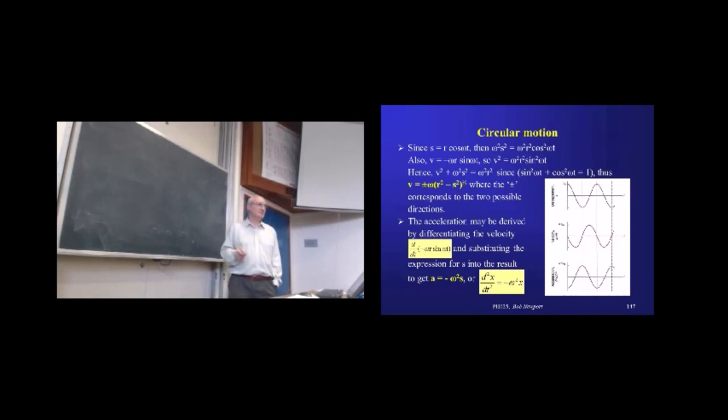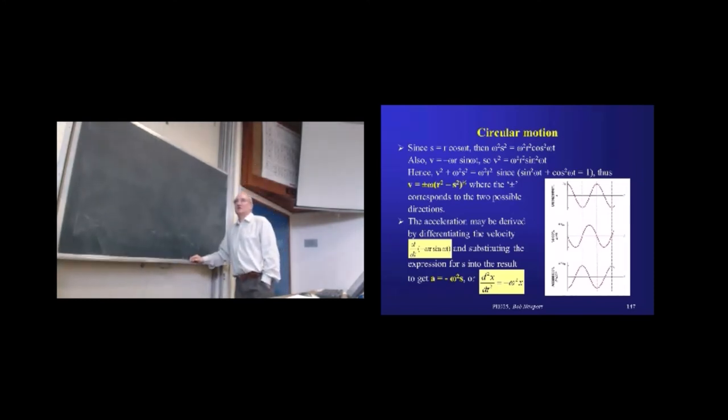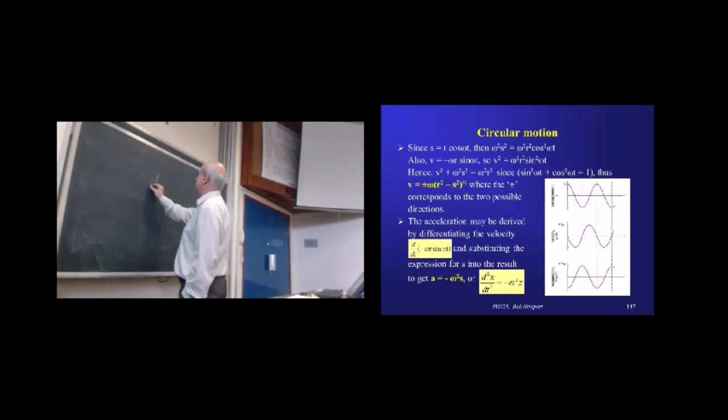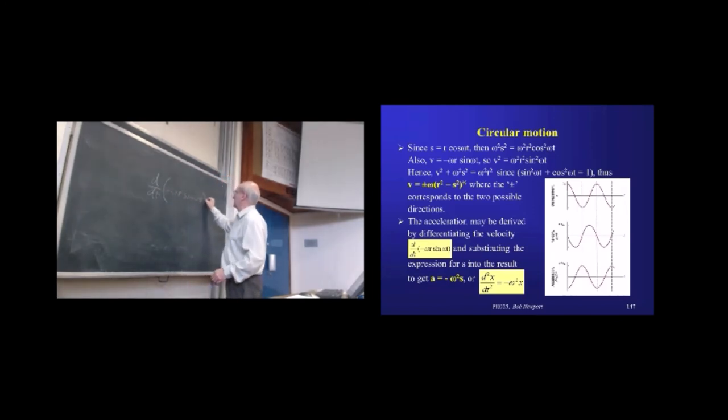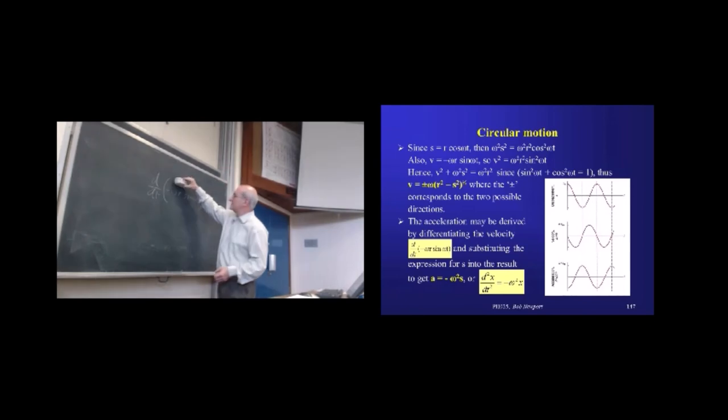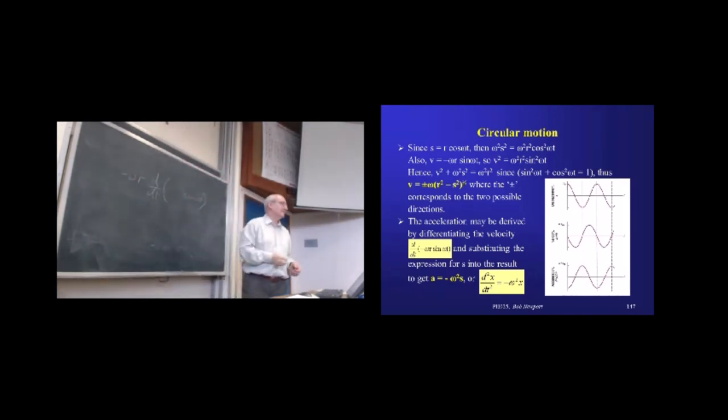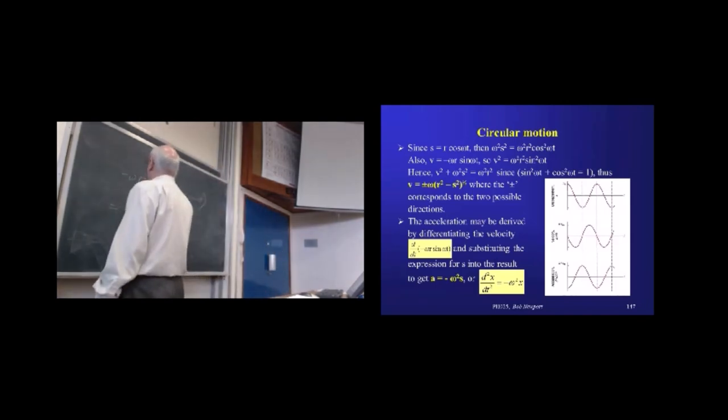All right, now we can simplify this. Let's see if you can work through this with me. We've got, what we need to do is to differentiate our velocity. All right, actually we could rewrite this and make our lives a little bit simpler because these things are constant. That's the amplitude and the angular frequency. So, I can stick those out there. Makes life a little bit easier. So, now we've got to differentiate sine ω t with respect to t. So, what is this?